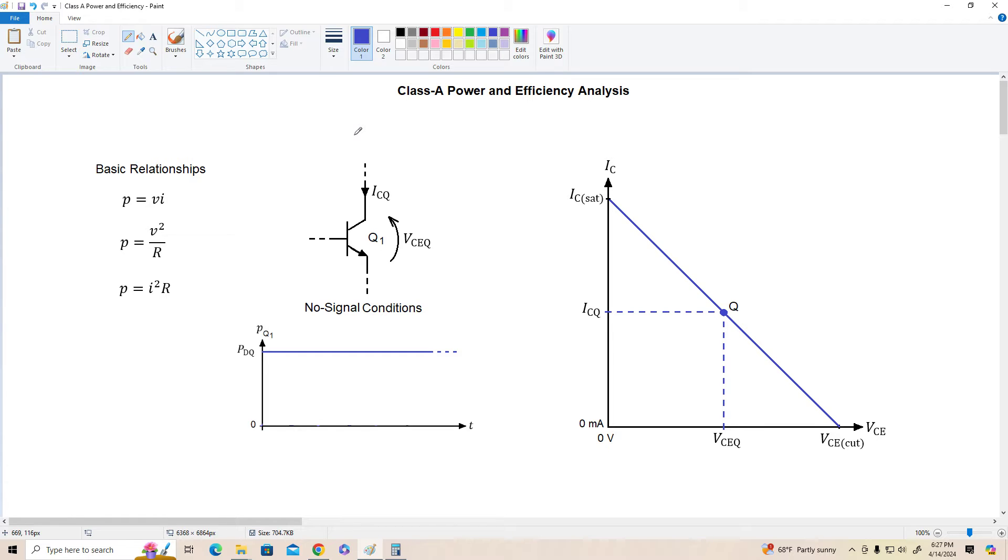A class A amplifier typically has its Q point located at or near the center of the load line. Before we go on, let's review a couple of basic relationships. Power is equal to voltage times current, or V squared over R, or I squared R. These are all equivalent expressions for power.